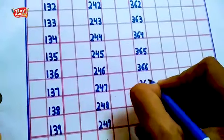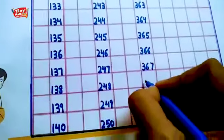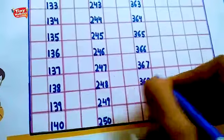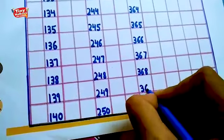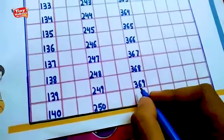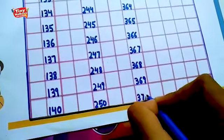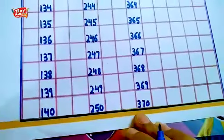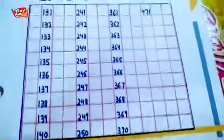After 365 is 366, 367, 368, 369. After 369 is 370.